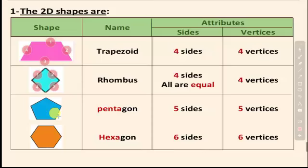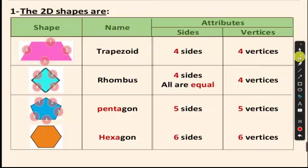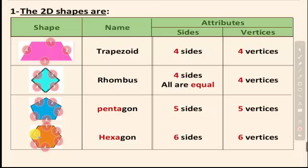Let's count the sides of the next shape: one, two, three, four, five — I have five sides. When I have five sides, the name of the polygon is pentagon. You have to memorize these names very well. Five sides and five vertices: pentagon. The next shape has six sides: one, two, three, four, five, six. Six sides — like 'hex' — so the name is hexagon. A hexagon has six sides and six vertices.